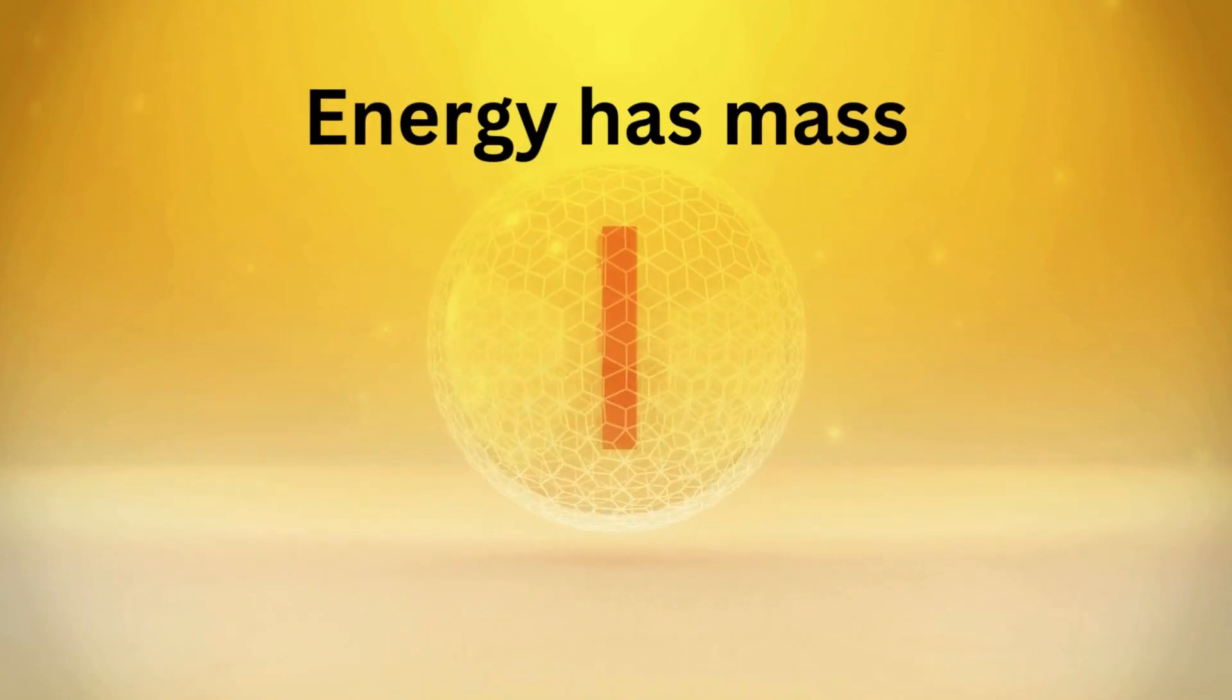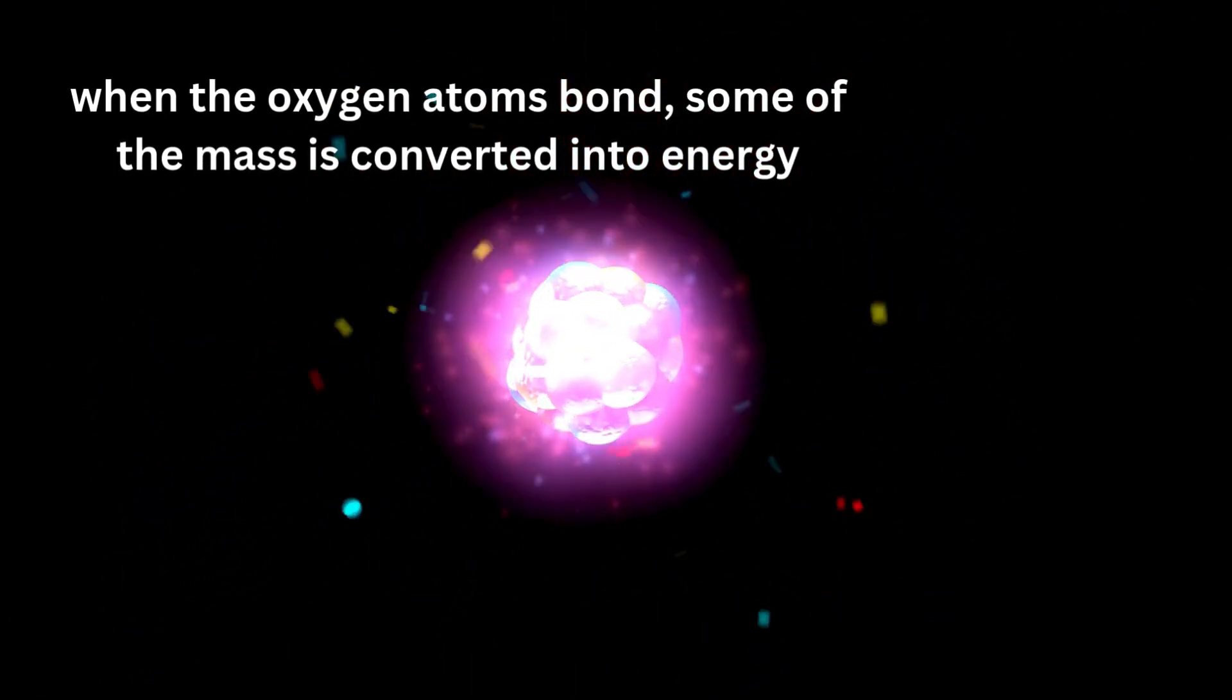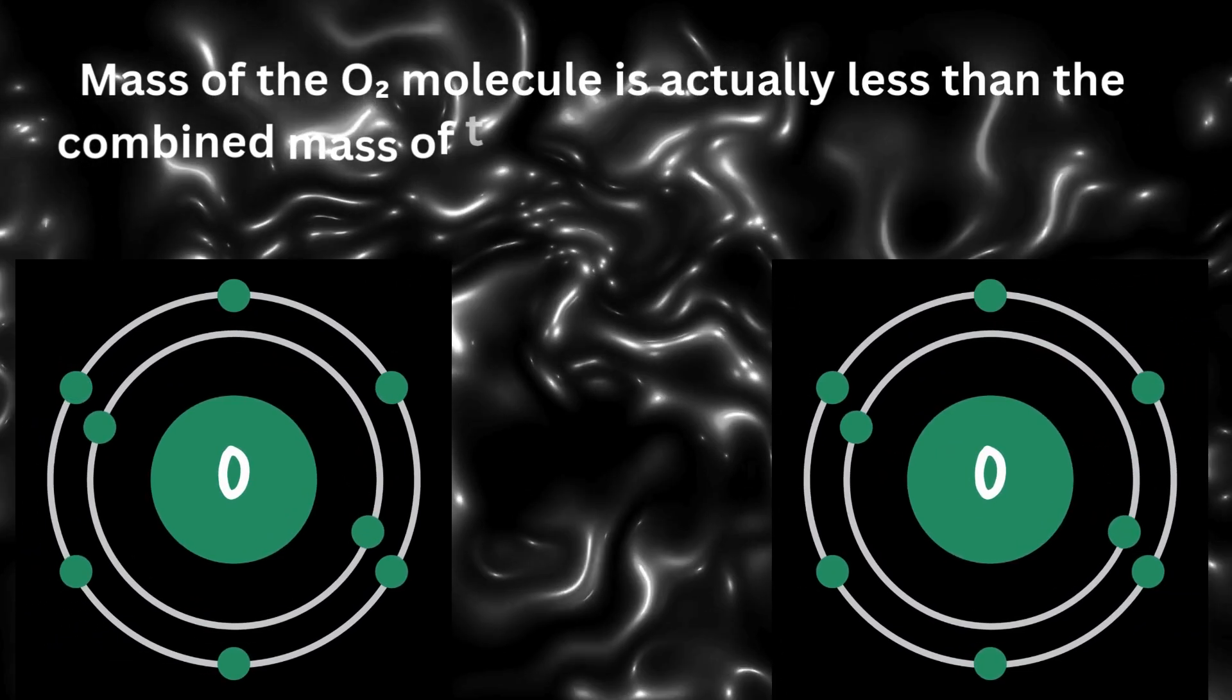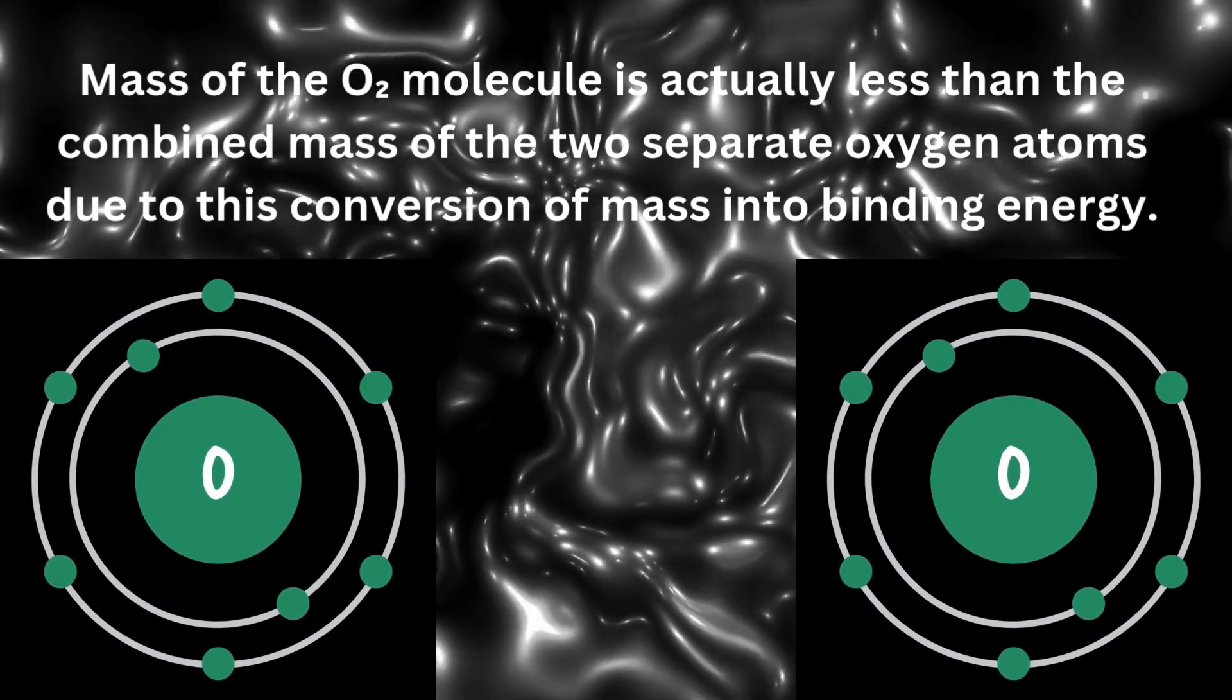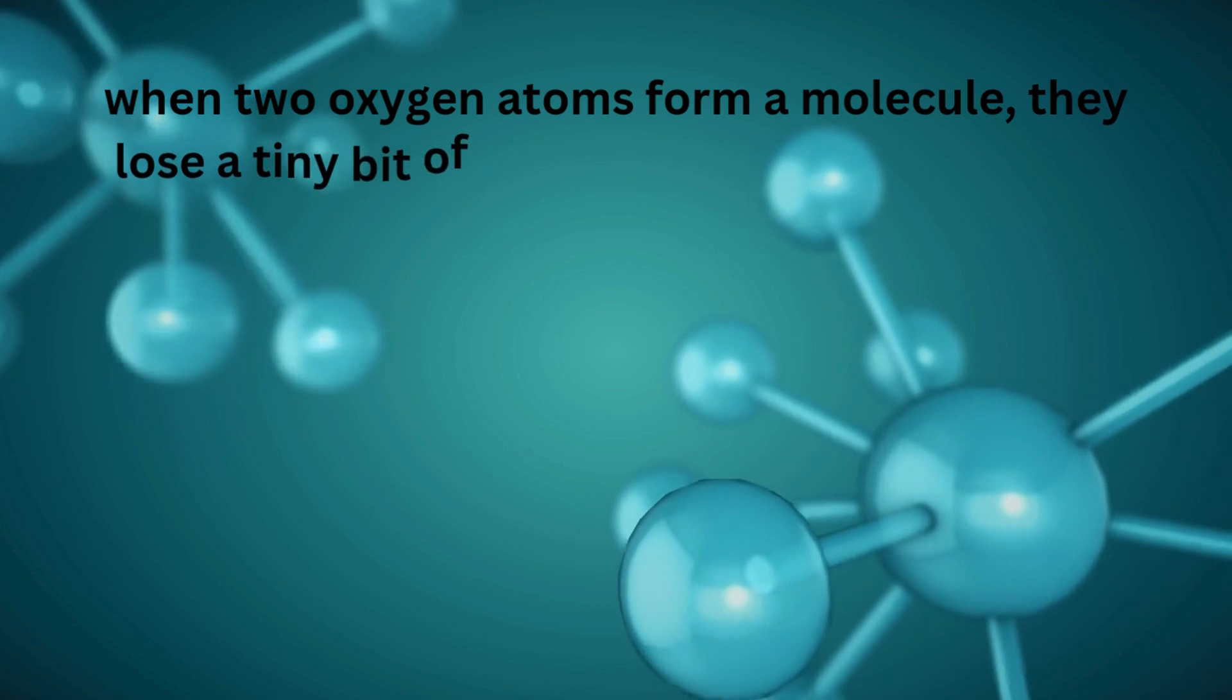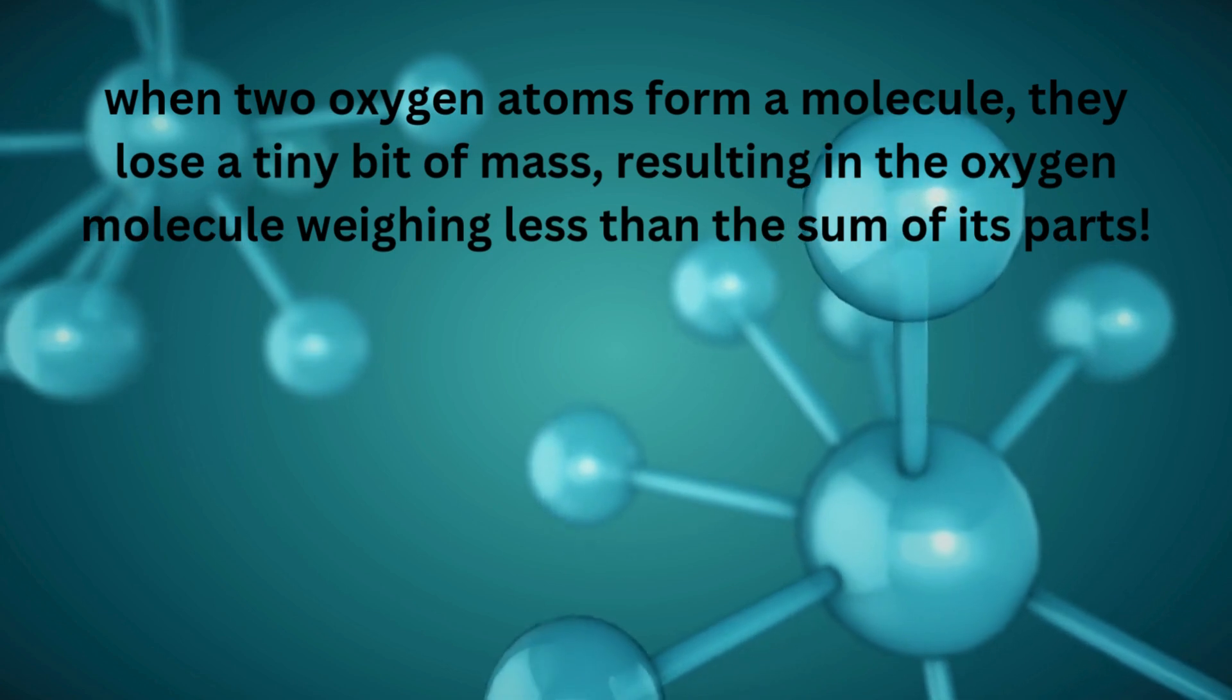So, when the oxygen atoms bond, some of the mass is converted into energy. This means that the mass of the O2 molecule is actually less than the combined mass of the two separate oxygen atoms due to this conversion of mass into binding energy. So, in essence, when two oxygen atoms form a molecule, they lose a tiny bit of mass, resulting in the oxygen molecule weighing less than the sum of its parts.